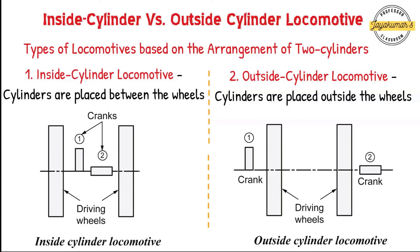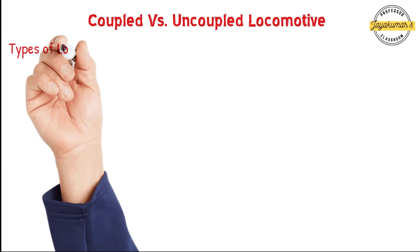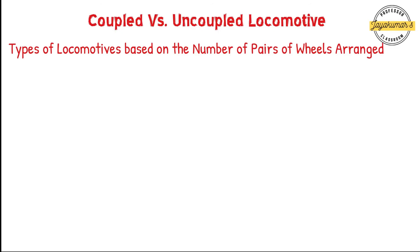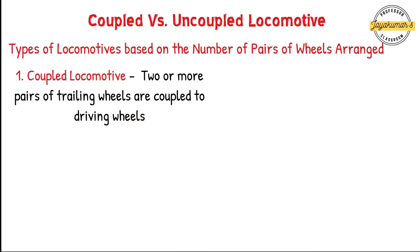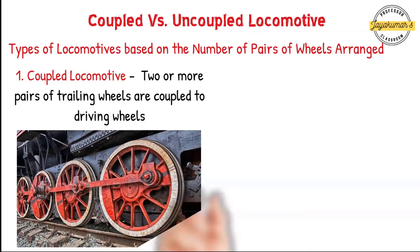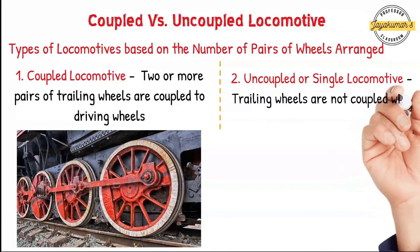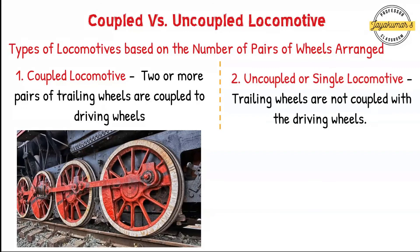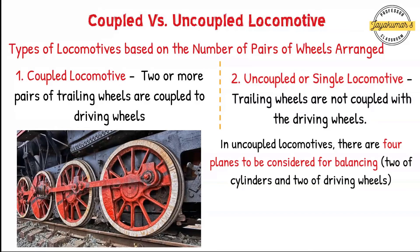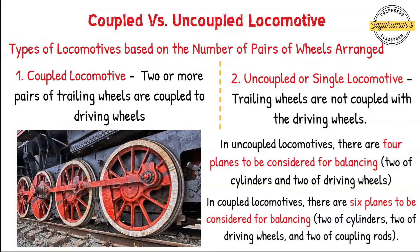Locomotives are also of two types: coupled and uncoupled, based on the number of pairs of wheels coupled together. In a coupled locomotive, two or more pairs of trailing wheels are coupled to the driving wheels — and practically all locomotives we see today are coupled locomotives. In an uncoupled or single locomotive, trailing wheels are not coupled with the driving wheels at all, and these are practically not in use. It may be noted that in uncoupled locomotives there are four planes to consider for balancing — two of cylinders and two of driving wheels — whereas in coupled locomotives there are six planes: two of cylinders, two of driving wheels, and two of coupling rods.